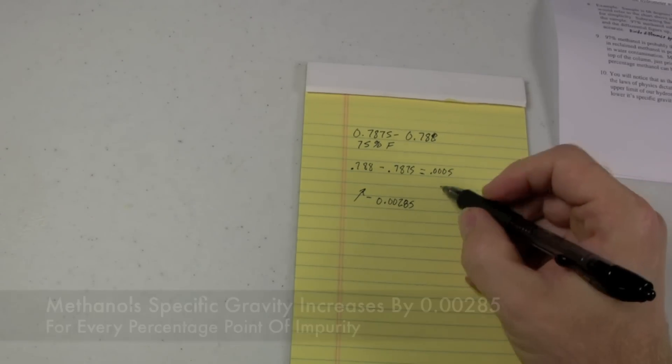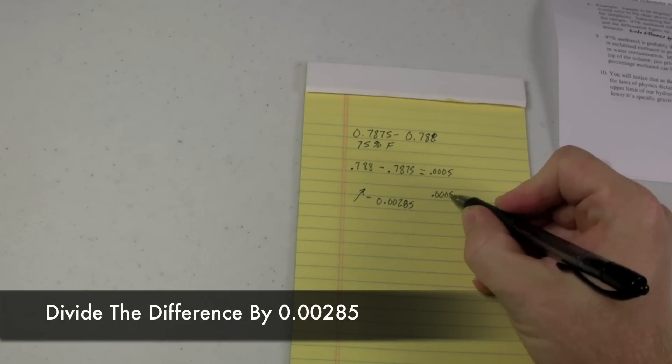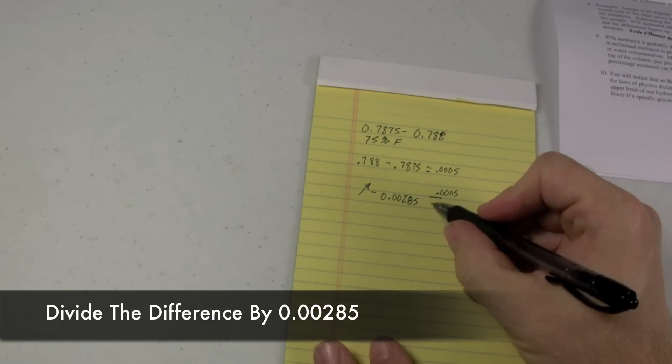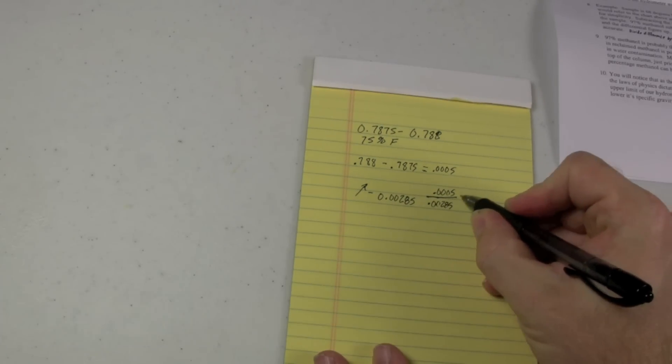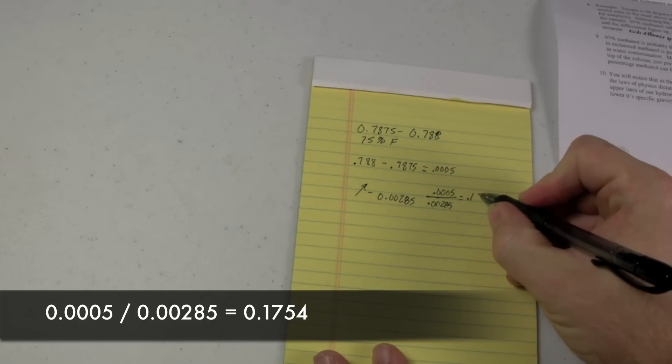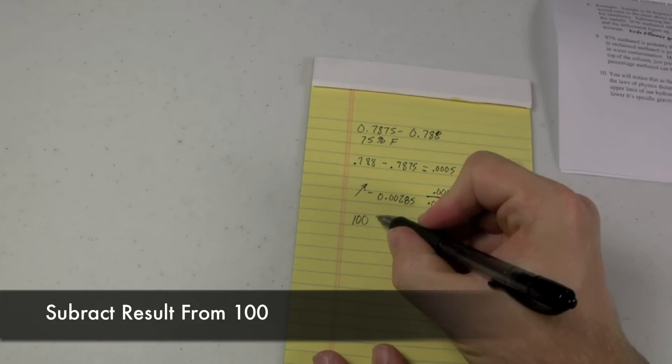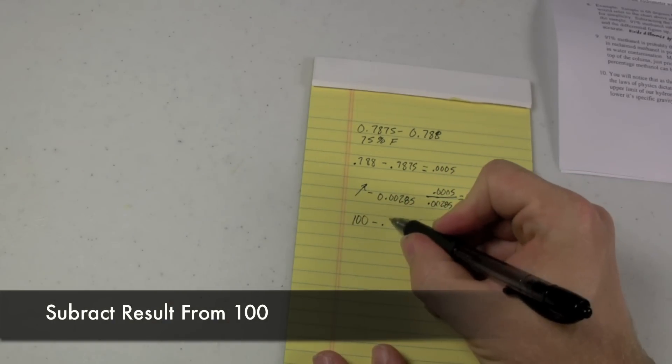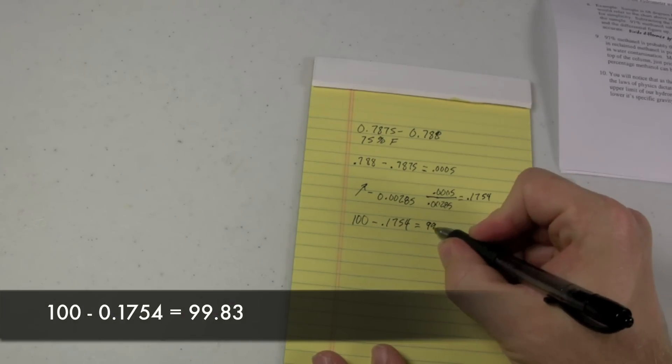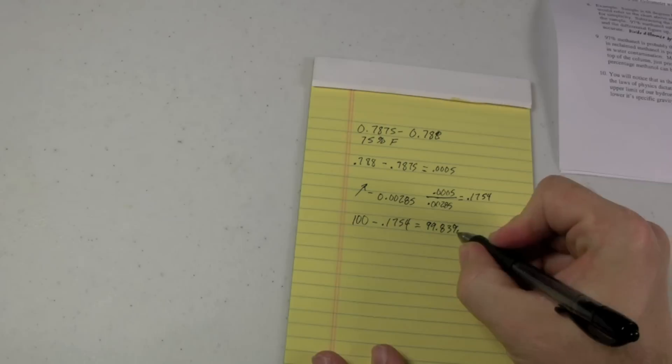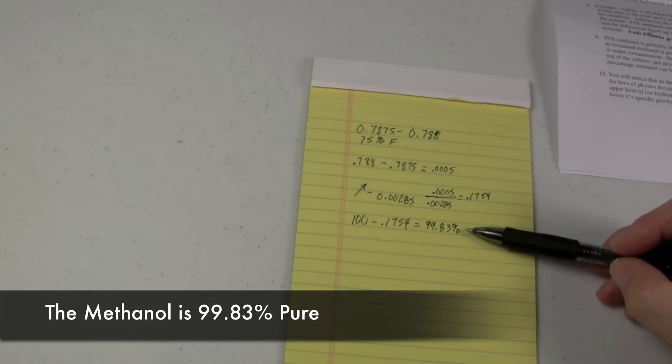So, we take, to figure out the purity, we take .0005, which is our reading, and we divide it by .00285. That gives us .1754. We then take 100, and we subtract .1754. That's going to give us 99.83%. So this methanol would be deemed 99.83% pure.